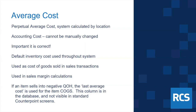We'll talk about a few methods to correct average cost if it becomes incorrect. This is the default inventory cost used throughout the system — if you do an adjustment, transfer, or other inventory activity, average cost is the default. It's also used as the cost of goods sold in sales transactions, and therefore it's used in figuring the sales margin on all your sales.